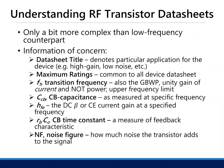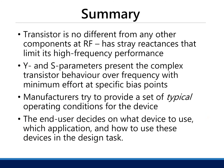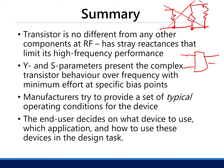Other things to look for in a data sheet include maximum ratings, HFE (beta or current gain), and noise figure, which determines how you use the amplifier for low noise amplifier design. Instead of analyzing the complicated transistor equivalent circuit directly, we look at transistors as networks, using Y or S parameters to design circuits around them and achieve optimum behavior.